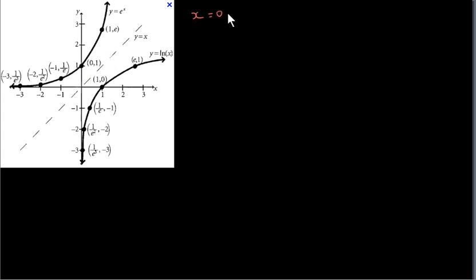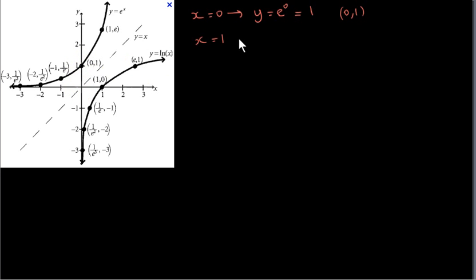Let's see what the value of the function is at x equals 0. When x equals 0, y equals e to the power of 0, which is 1, because any number to the power of 0 is 1. So we have the point (0,1) on the graph — we go to x equals 0 and up to 1. When x equals 1, we have y equals e to the power of 1, which is just e. To three decimal places, that number is 2.718.